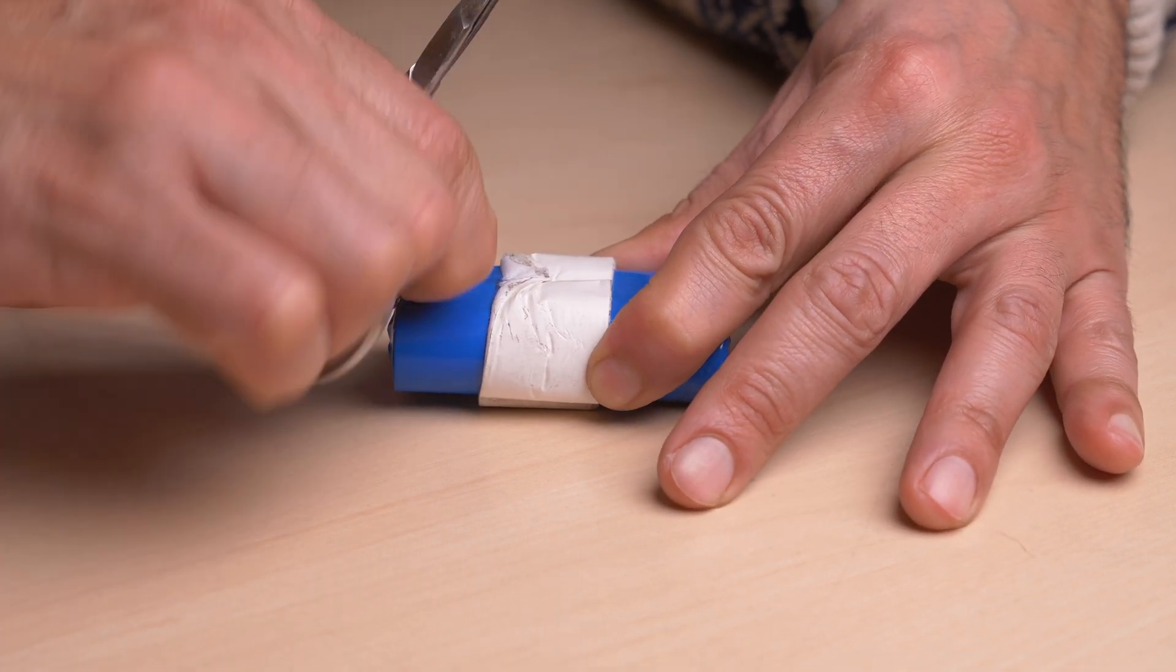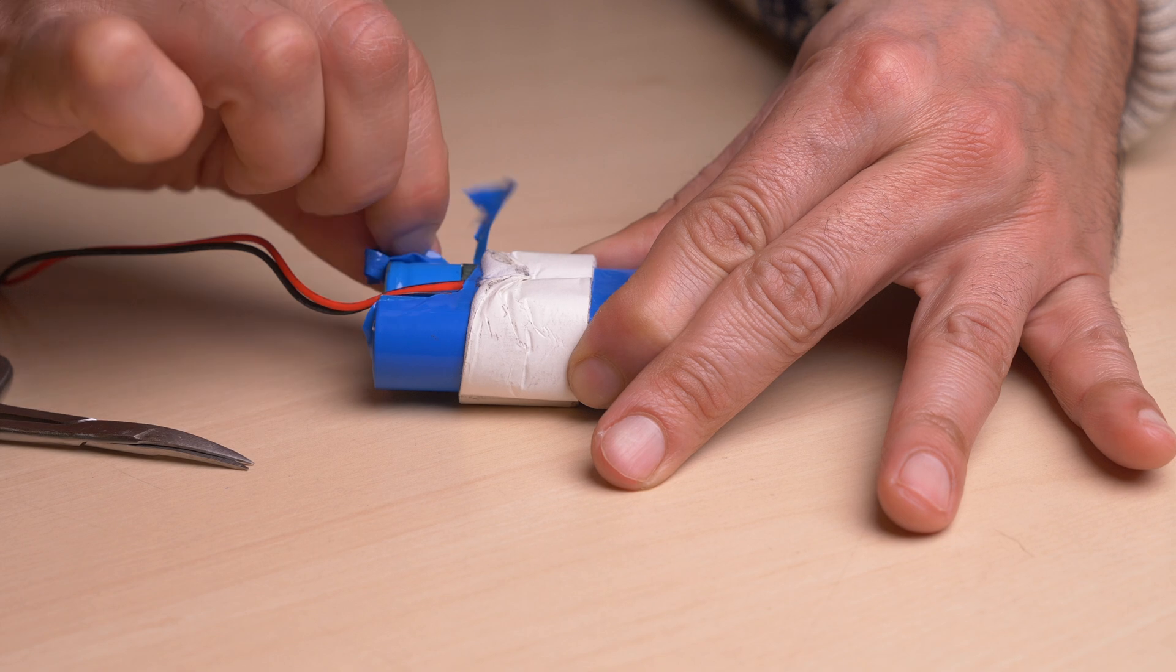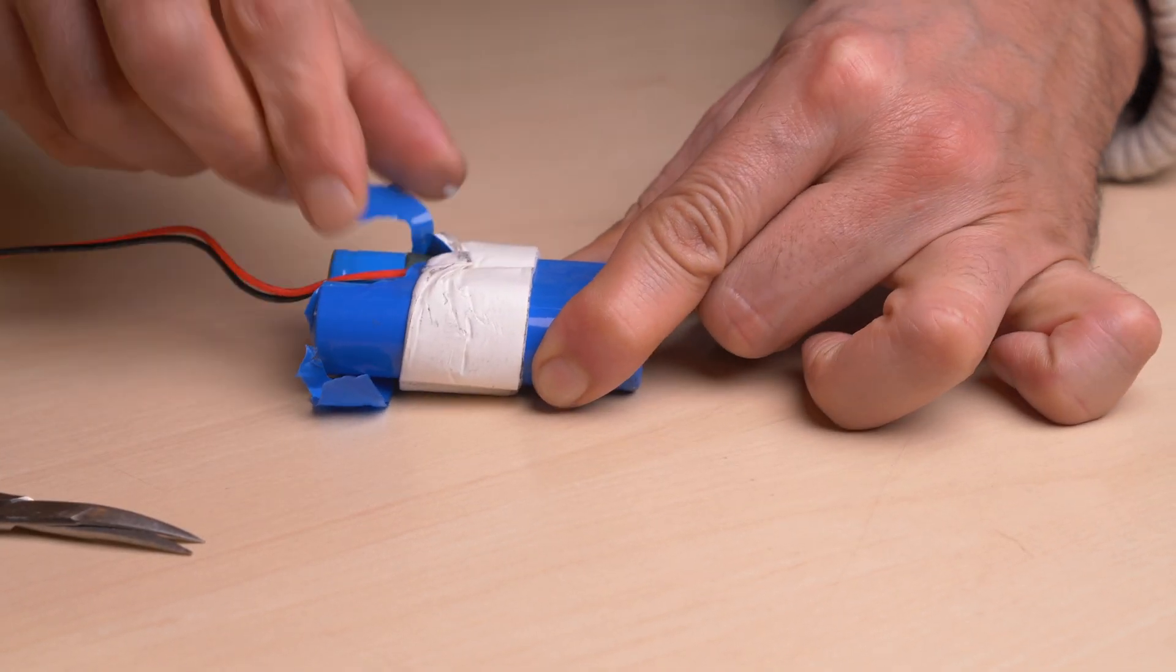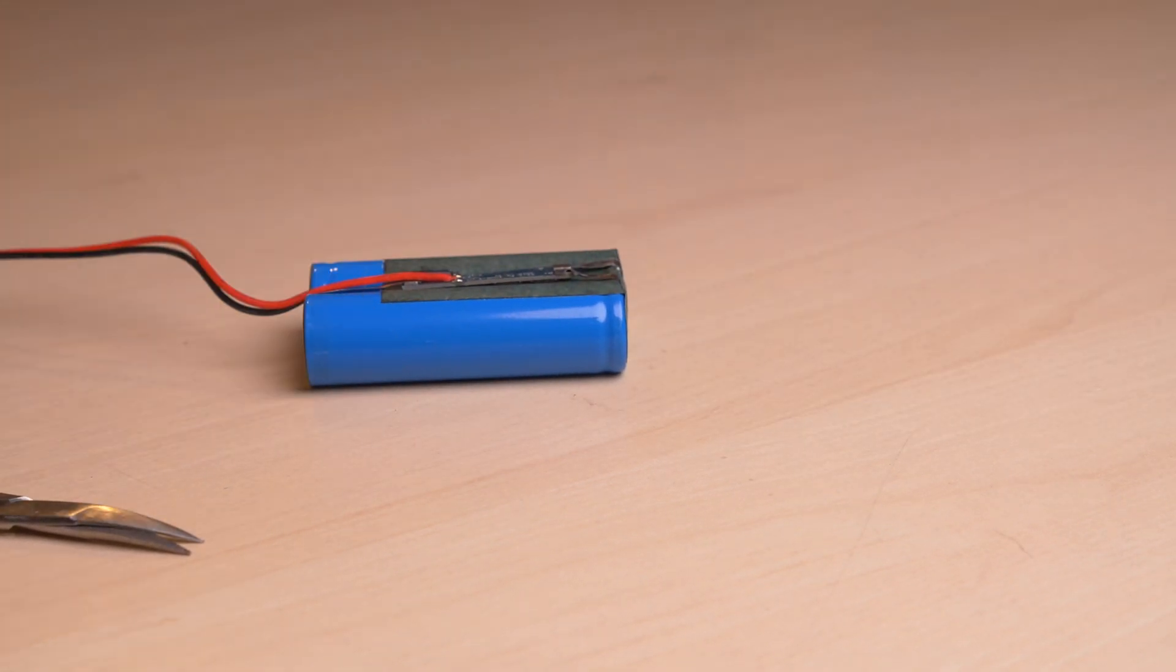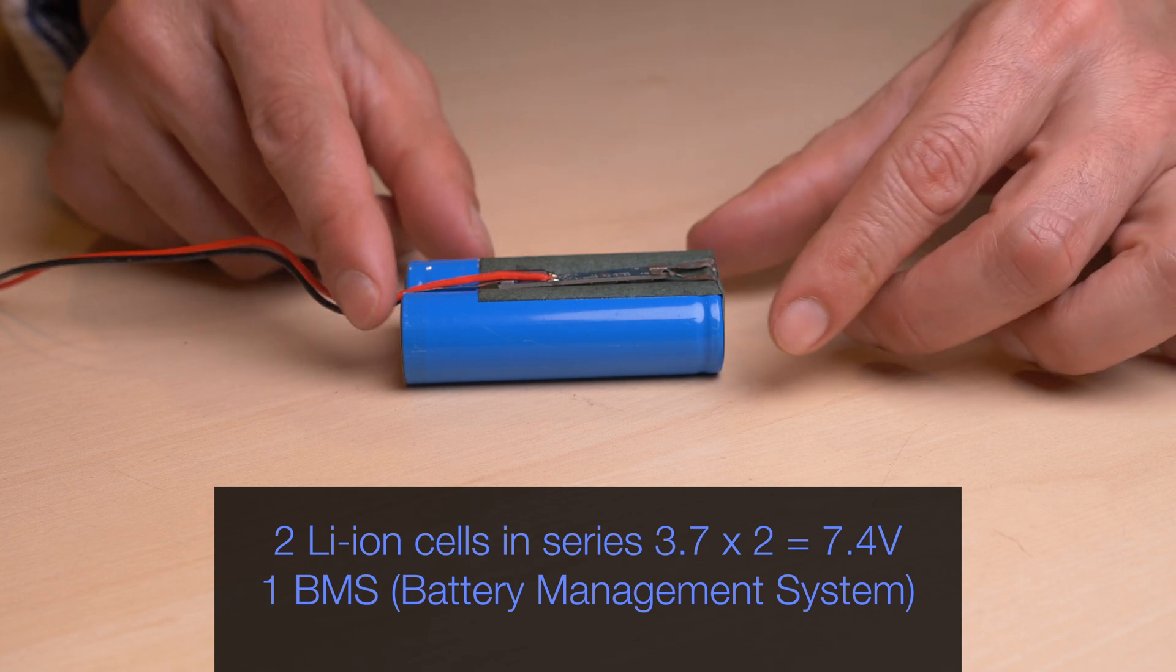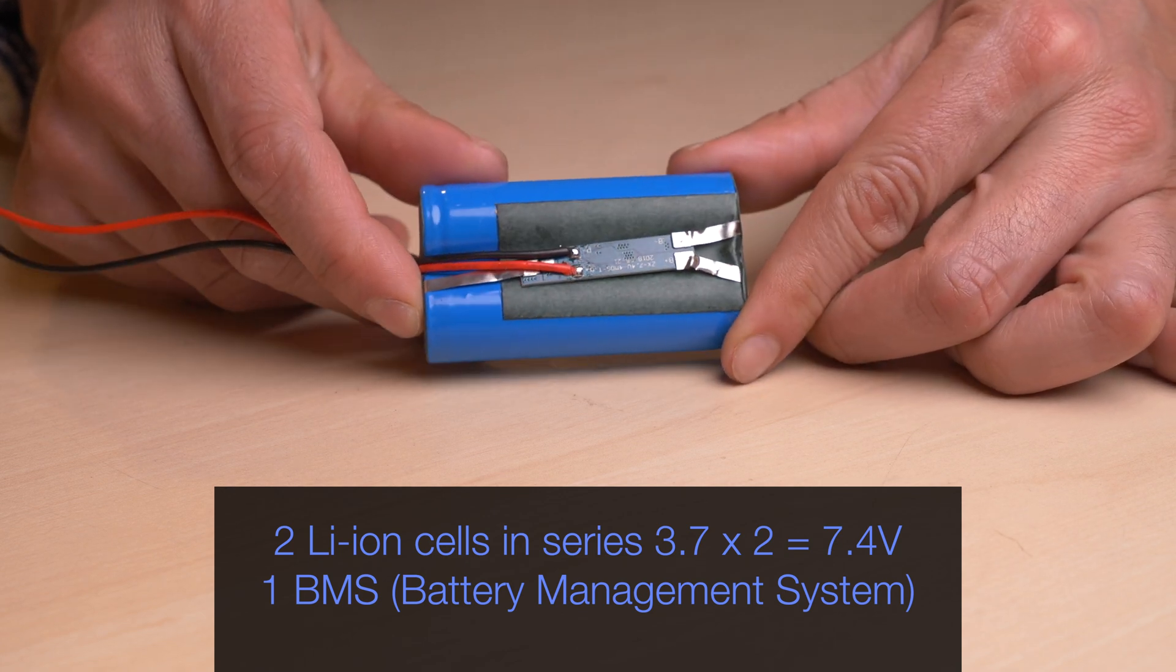Man, everything else seems to be fine. Is it the battery after all? But the voltage was good. Let's open it. There should be two lithium-ion cells, and one BMS battery management system. Maybe the BMS is toasted? Let's check it out.